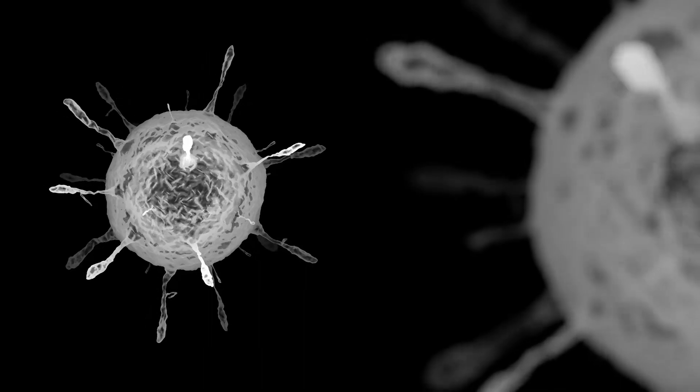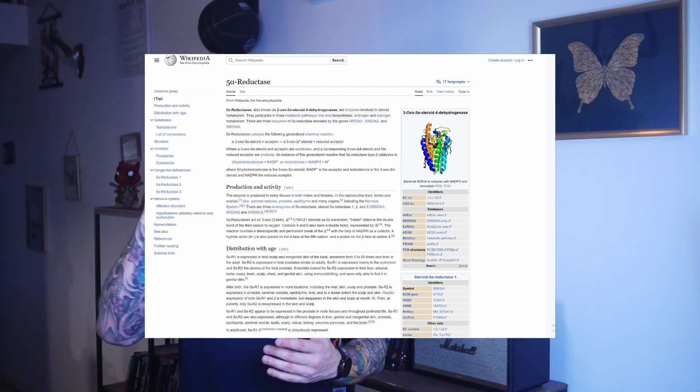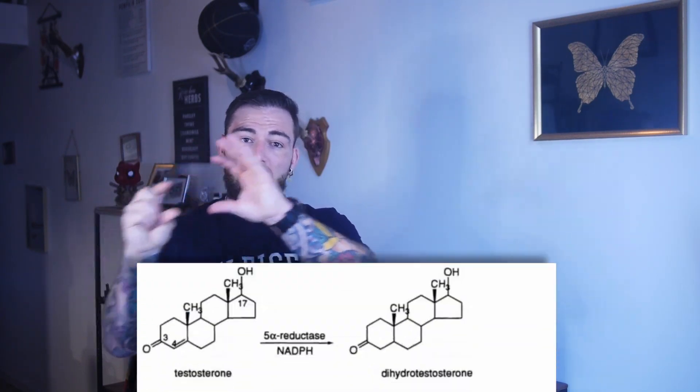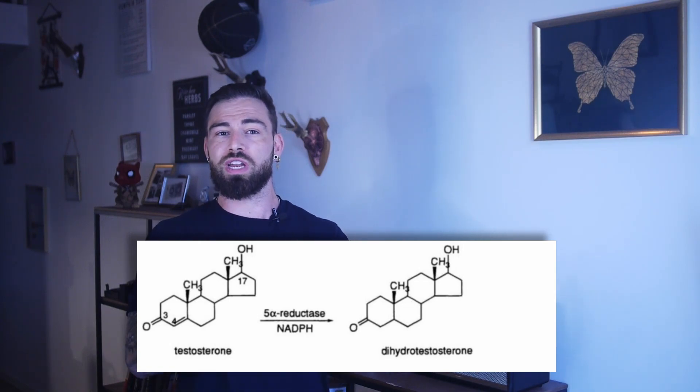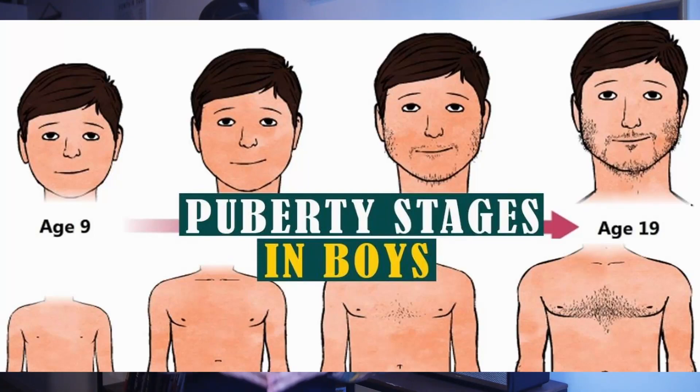So why do we have DHT in the first place? DHT is an androgen hormone. When you hit puberty, your body starts to produce what's called the 5-alpha reductase (5-AR) enzyme. This enzyme takes a portion of your testosterone and converts it into another hormone called dihydrotestosterone. DHT is about five times as strong as testosterone in producing male characteristics — things like growth of the penis, beard growth, voice deepening, and chest hair production.